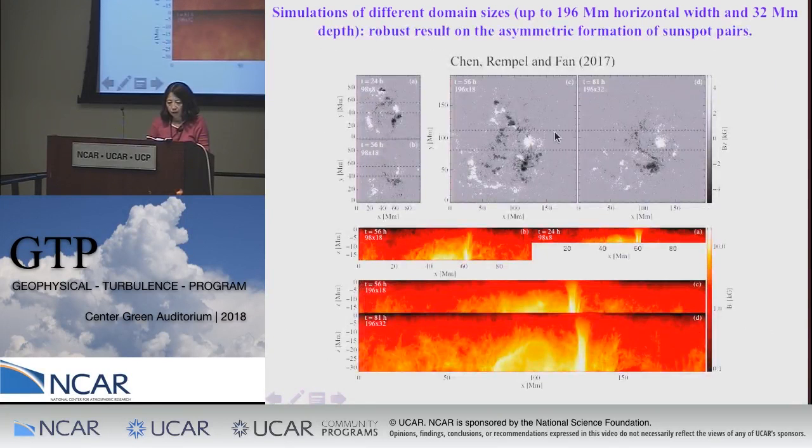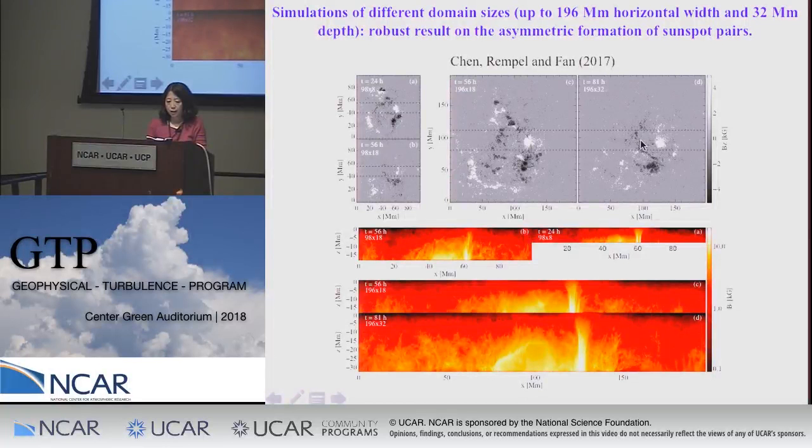The result of asymmetric active region formation is robust across all different domain sizes studied, with the deepest domain case showing the most pronounced asymmetry between the leading and following polarity of the sunspot pairs.